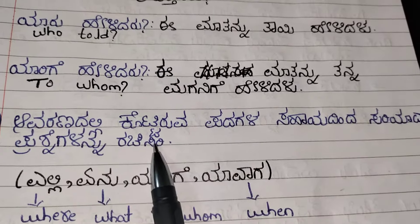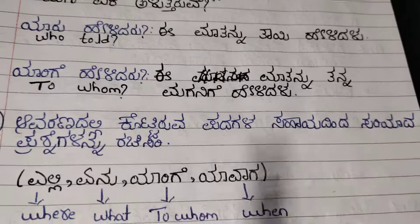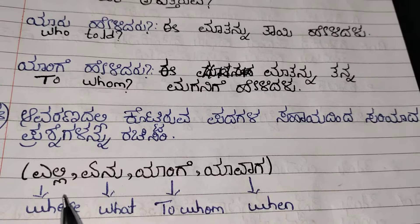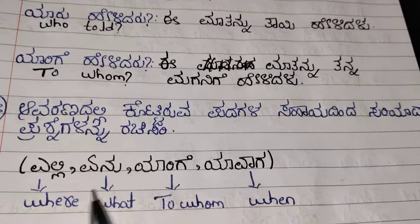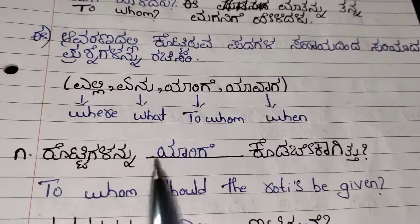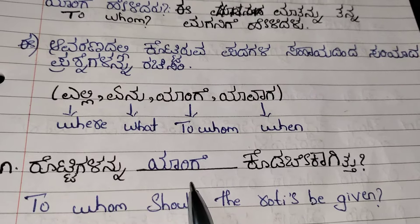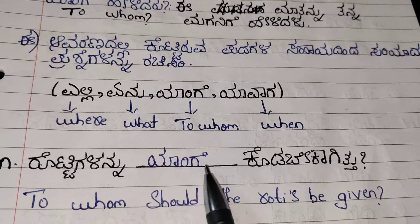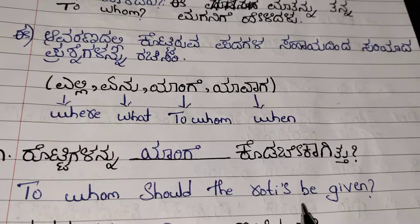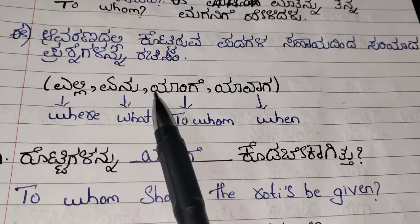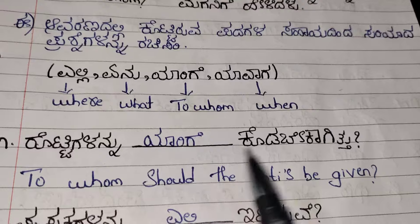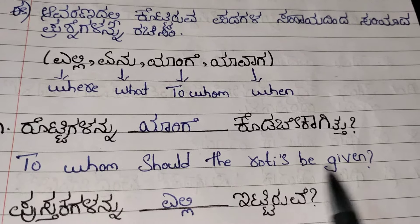Now let's see. They have given some words here. Using these words, you need to frame a proper question. Rottigalannu dash kodabekagittu. Rottigalannu Yari ge — Yari ge means to whom. Rottigalannu Yari ge kodabekagittu. That means to whom should the rotis be given. Yalli means where, Yenu means what, Yari ge means to whom, Yavaga means when.